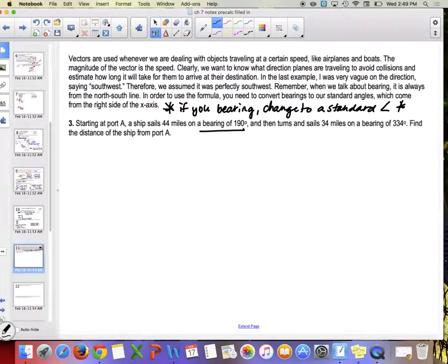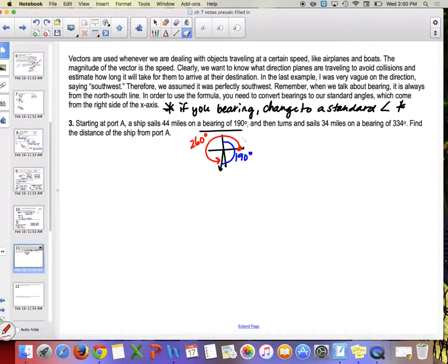So if I say a bearing of 190 degrees, let's do a little tiny sketch here. Do you guys remember what that was? 180 degrees, yeah, but bearing starts from the north-south line, so it's going to be like this, 190 degrees like that. So what would our standard angle be if I started here and went around? It would be 180 plus another 80 degrees, yeah 260, thank you, 260 degrees. Does that make sense? So when you say a bearing of 190, we're actually using 260. Isn't that annoying?